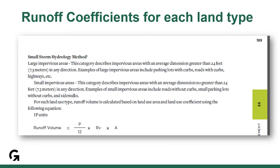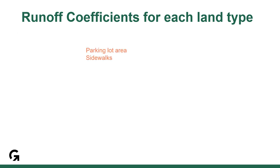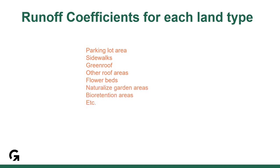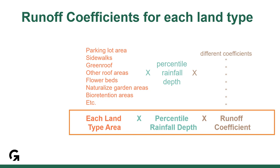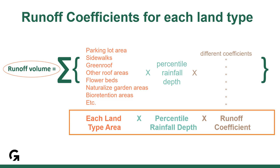The more accurate methodology noted in the reference guide requires determining the runoff coefficients for each land type, or the percent impervious following the small storm hydrology method. Generally, we expect to see each land use type — whether parking area, sidewalks, flower beds, green roof, white roof, etc. — listed separately with its area, multiplied by the chosen percentile of rainfall depth, and then multiplied by the runoff coefficient for that surface. The more impervious the surface, the more runoff you expect. All those values add up together to give the runoff volume entered into the calculator.